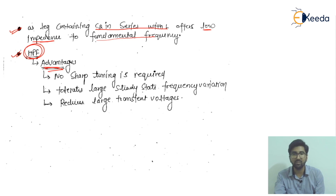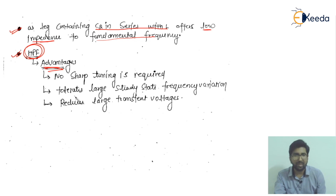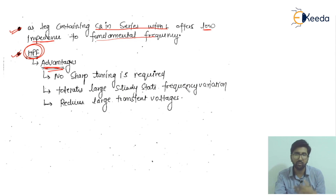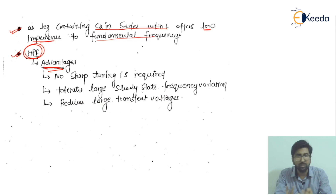The advantages of the high-pass filter are: first, no sharp tuning is required — it operates instantaneously above the cutoff frequency without needing precise tuning. Second, it can tolerate large steady-state frequency variations in the system. Third, it reduces large transient voltages. I hope you have understood all the configurations related to this topic. Thank you and goodbye.